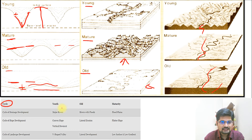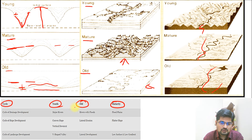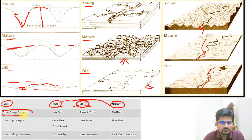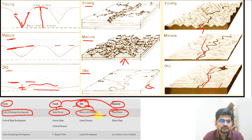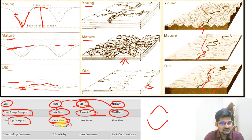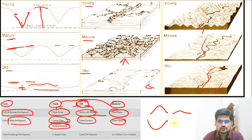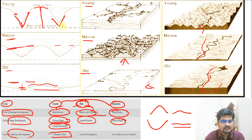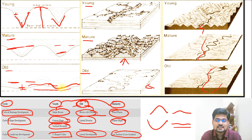Looking at a comparative table: in the cycle of drainage development, major rivers are present in youth, then floodplains develop in maturity, and in old age rivers with very flat courses predominate. In the cycle of slope development, a convex slope with vertical down-cutting occurs in youth, flattening of the convex slope happens in maturity, and in old stage lateral erosion makes the surface almost parallel to the base level. In landscape development, a V-shaped valley appears in youth, low gradient surfaces develop in maturity, and finally lateral development produces an almost flat surface in old age.